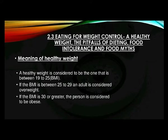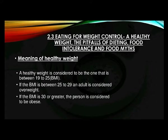BMI refers to Body Mass Index. If the BMI is between 25 and 29 in an adult, it is considered overweight, whereas if the BMI is 30 or greater, the person is considered obese. An individual with a healthy weight leads a healthy life with a reduced risk of diseases. On the other hand, an individual with an unhealthy or overweight condition cannot lead a healthy life. A healthy weight lowers an individual's risk for health problems such as heart disease, stroke, high blood pressure, and diabetes.